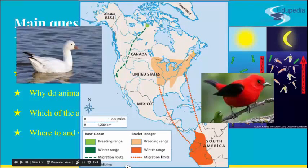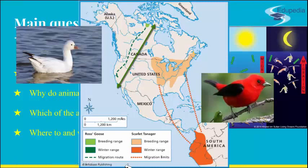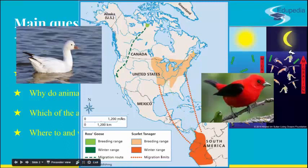Different birds have different breeding locations and migration paths. Ross's geese, for example, breed in the Arctic and then migrate south through Canada and to the United States, returning southwest to winter in California, and like other birds, they fly with a turn southeast towards the Gulf Coast. On the other hand, scarlet tanagers' migration range stretches from the United States to South America, and after breeding in various parts of the United States, they fly south in the fall. You can see their breeding range and winter range illustrated here.